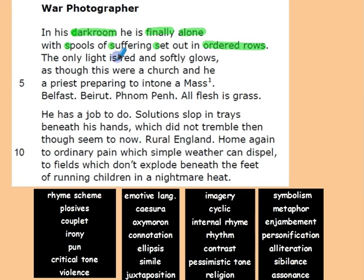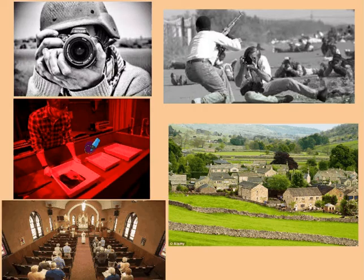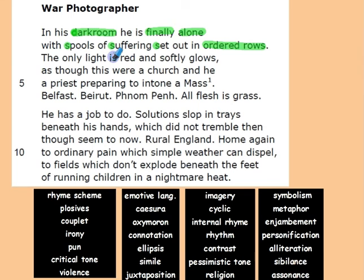'The only light is red.' In his dark room, the only light is red — a symbol of danger and also blood. In war we see only danger and blood; there is no peace, no happiness. The meaning is that we don't get anything from war apart from blood and dead bodies. 'And softly glows' — there is a contrast here between the battlefield and his dark room, where the light glows softly, as though this were a church.